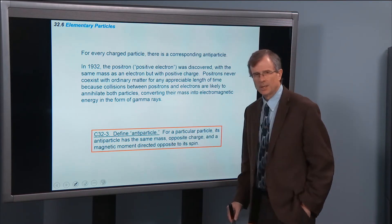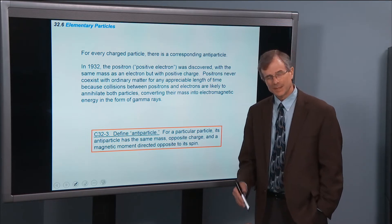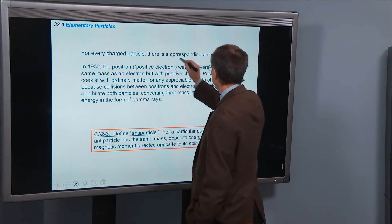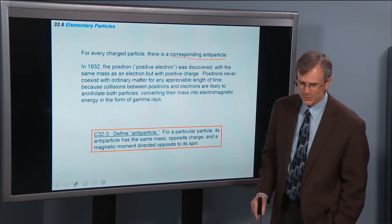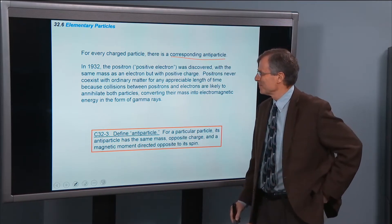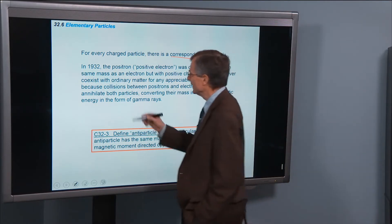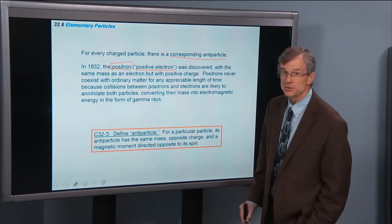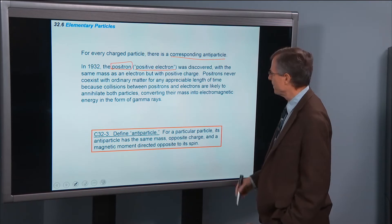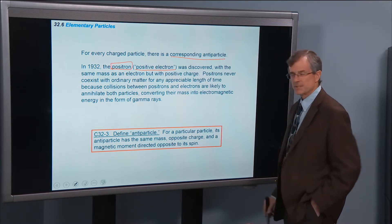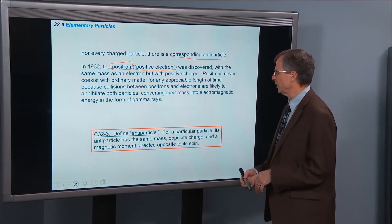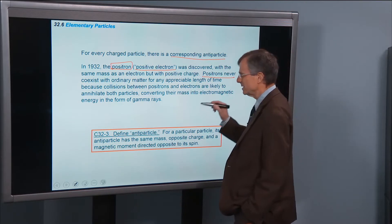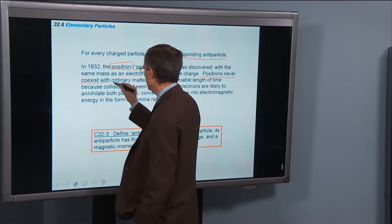First of all, I'd like to reveal to you that for every charged particle, there is a corresponding antiparticle, often misunderstood. In 1932, for example, the positron was discovered. It has the same mass as the electron, but it has a positive charge. And positrons never exist, at least for very long, with ordinary matter.